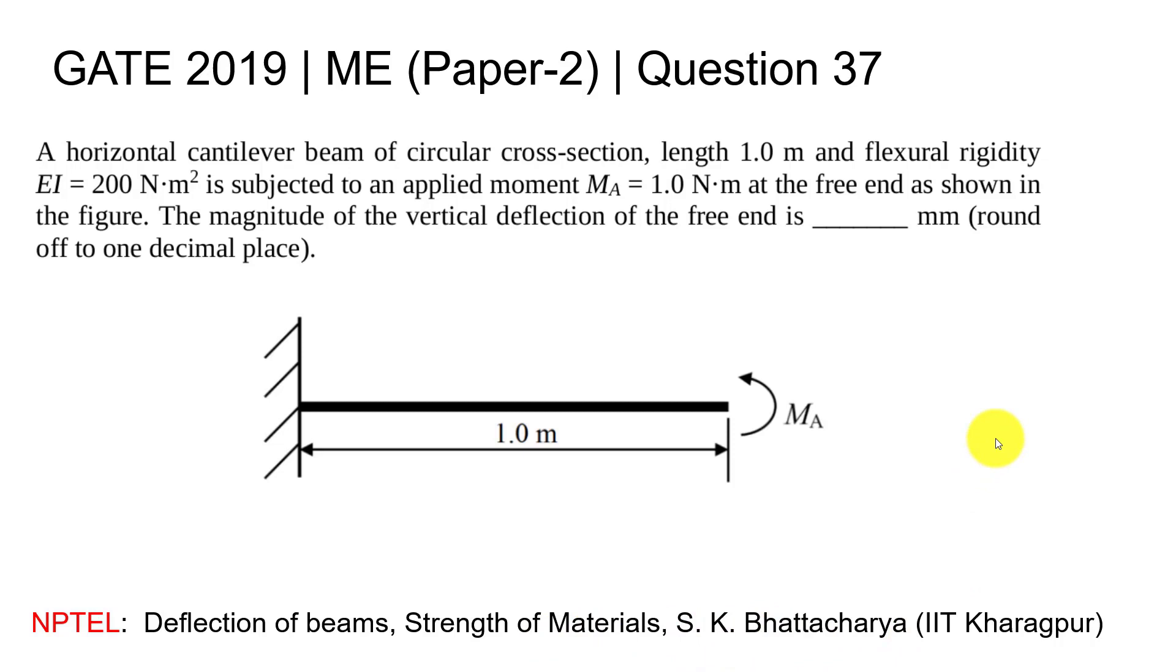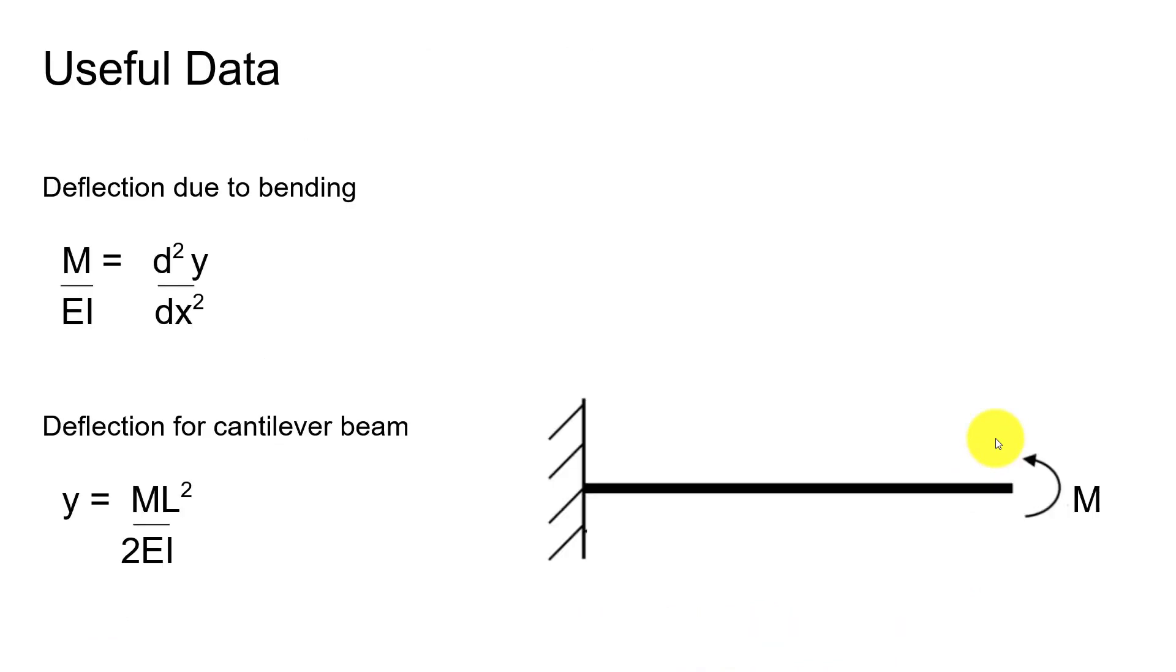Let's move forward. These are some of the useful data that we will be using in solving this particular problem. The initial one is the deflection formula. You can utilize this for this particular cantilever beam and derive an equation which is y equals ML squared by 2EI. You can use this formula directly, but initially we will see how to derive this formula so that you don't have to remember it.